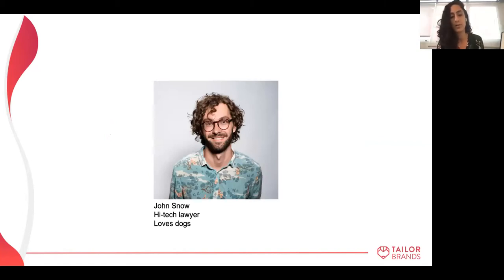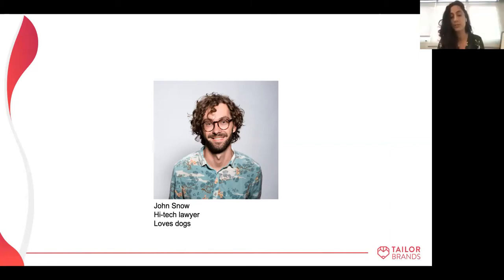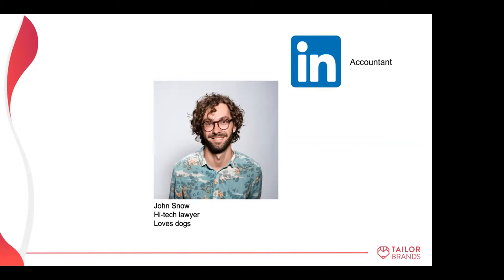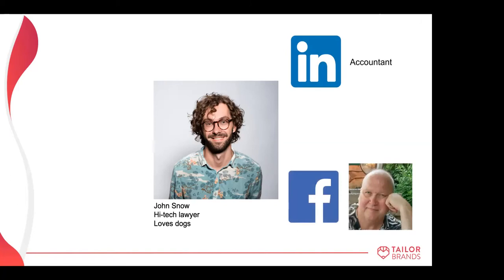Let's say this person, John Snow, is a high-tech lawyer who loves dogs. When you look him up online, you expect certain things. But on LinkedIn it says he's an accountant — that's strange and unexpected. On Facebook his photo is completely different from the one he shared. And on Twitter you see he actually doesn't like dogs and is more of a cat person. Your expectation was not met.